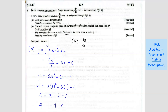dy/dx is 4x minus 6. We want to find this at x equals 1 at point P, so you get negative 2. So m1 is negative 2. We want to find the normal, so m2 equals negative 1 divided by m1, which is negative 1 over negative 2, giving an answer of 1 over 2. So the gradient of the normal is 1 over 2.